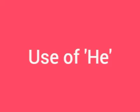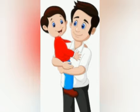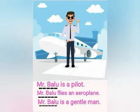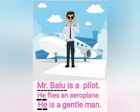Let us see where we use 'he'. When we are denoting a boy or a man, we use the pronoun 'he'. For example: 'Mr. Baloo is a pilot. Mr. Baloo flies an aeroplane. Mr. Baloo is a gentleman.' These three sentences describe Mr. Baloo. Instead of repeating his name, we can use the pronoun 'he': He flies an aeroplane. He is a gentleman.